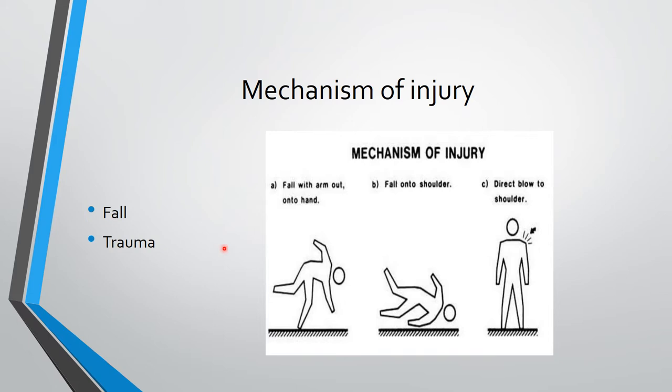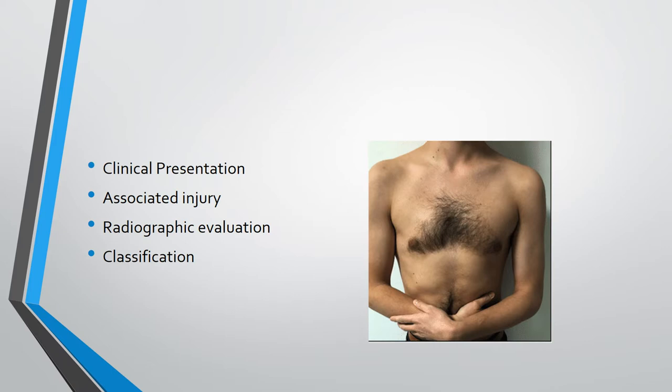The mechanism of injury is due to fall and trauma: fall on outstretched hand, fall onto the shoulder, and direct blow to the shoulder.